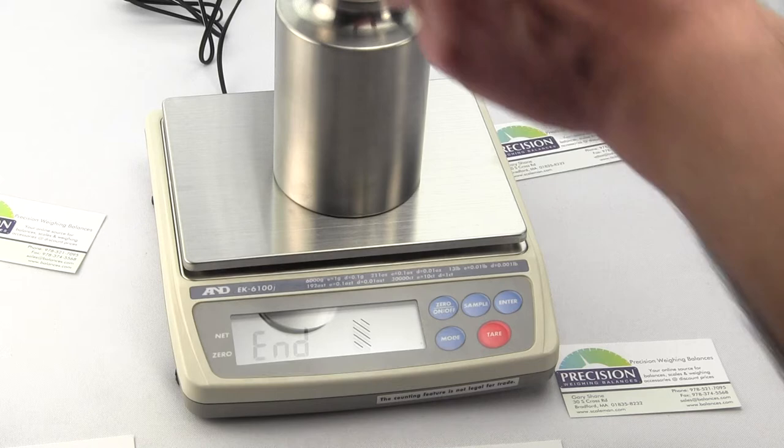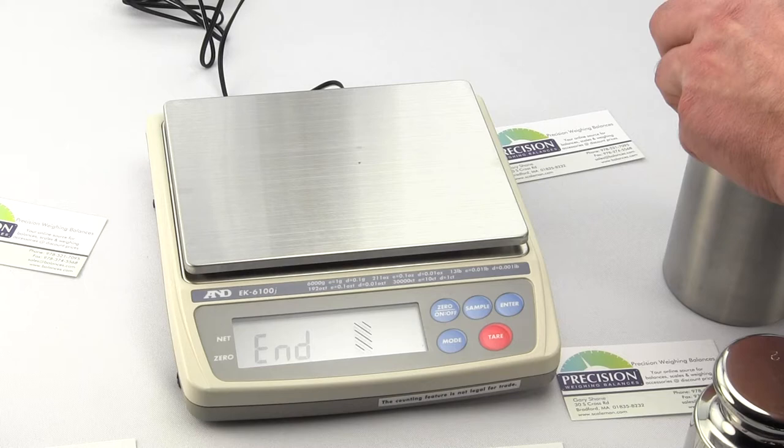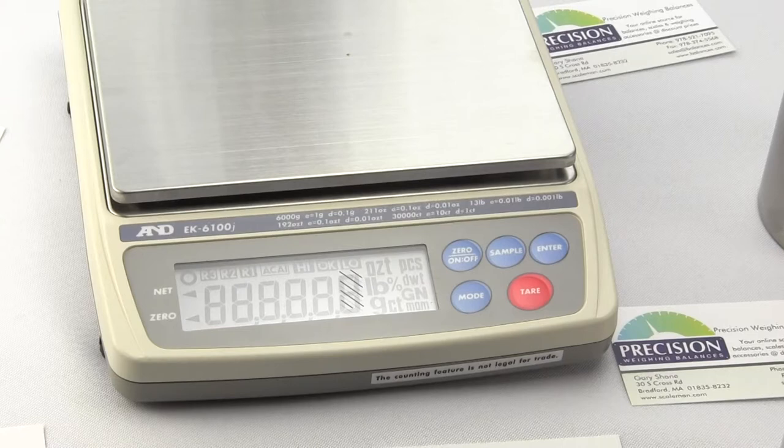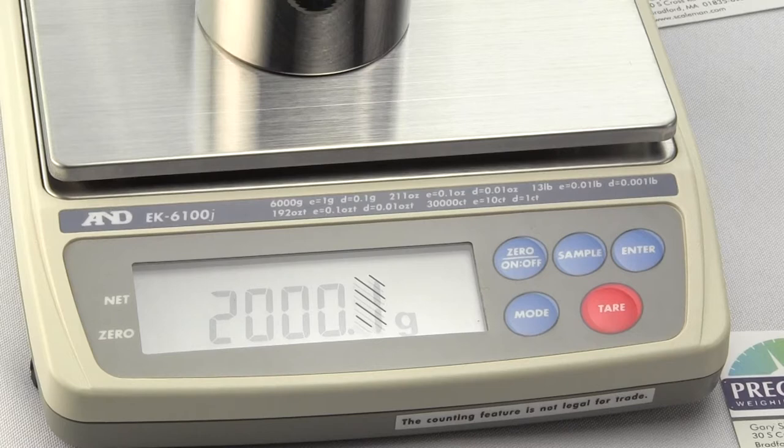Remove the weights. Press the MODE button. Returns the scale back to the weighing mode. Simply put a weight on. And your scale is calibrated.